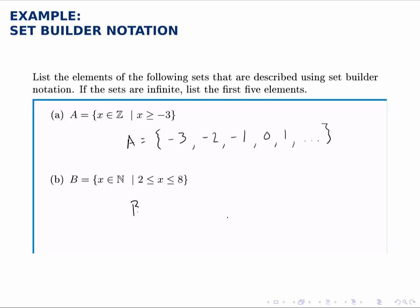So B is going to be the set of natural numbers, which are a subset of the integers, starting at 2.